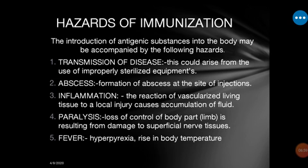For example, pentavalent vaccine contains five different antigens: hepatitis B, diphtheria, tetanus, pertussis, and influenza. Because of these five antigens being introduced simultaneously, the temperature rises, which is part of the hazard of immunization that usually arises.